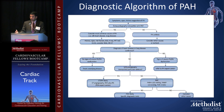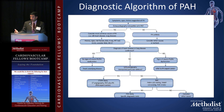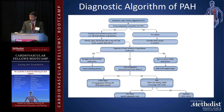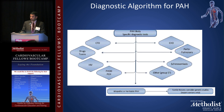You then get a series of tests to look for other causes — including intrinsic lung disease and chronic thromboembolic PH. For chronic thromboembolic PH, the test of choice is a VQ scan; CT pulmonary angiography is not as sensitive. Finally, right heart catheterization defines the hemodynamics — mean PA pressure, wedge pressure, and cardiac output — determining whether the patient has PAH or pulmonary venous hypertension.